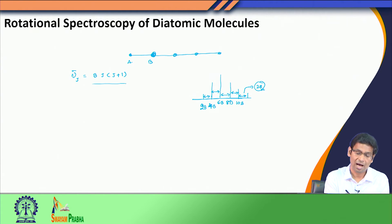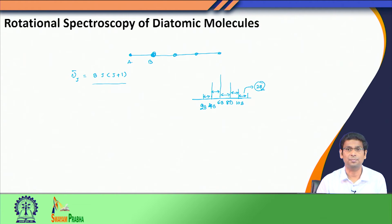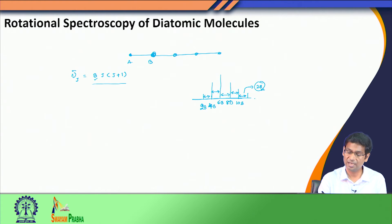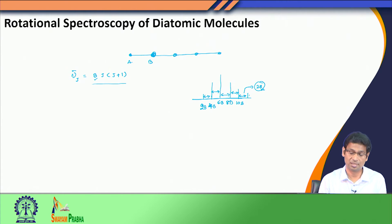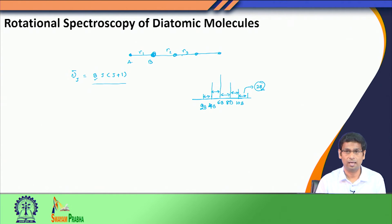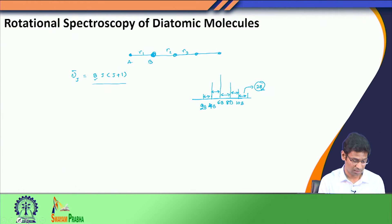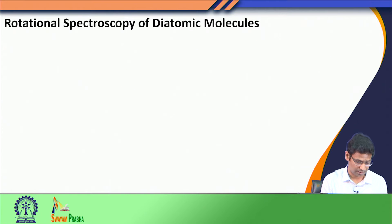In those cases also, the energy levels are given as BJ(J+1), so I will have only one rotational constant. Based on this one rotational constant, I will get one bond distance. But for a triatomic or tetratomic linear molecule, what distance would that represent? Now I have many distances R1, R2, R3. So how would I obtain structural information for a polyatomic linear molecule? That is the first question we address.